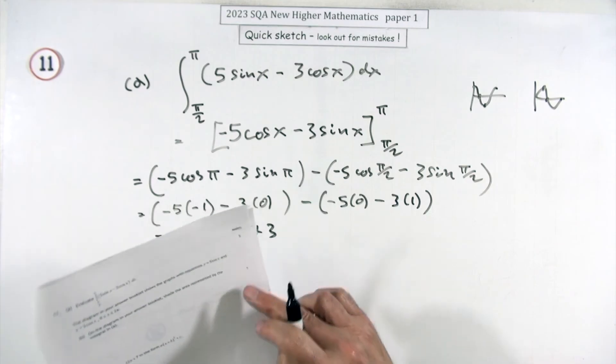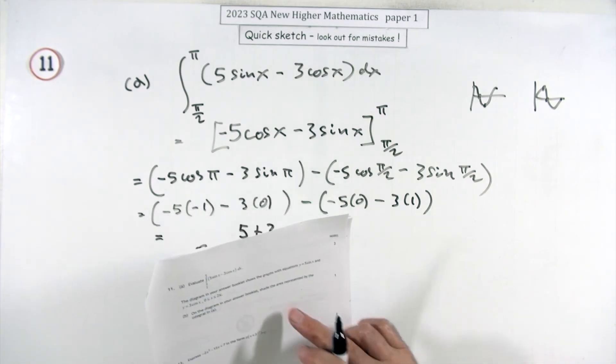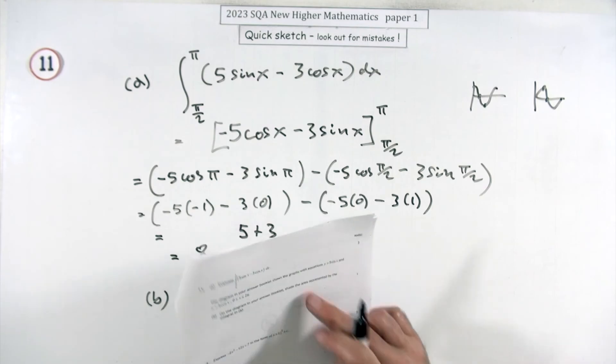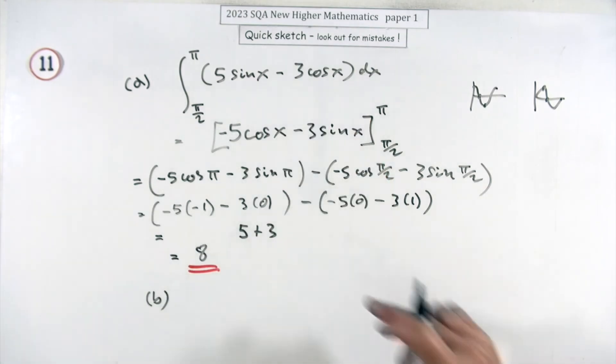That's five take away zero, which is five. Take away a negative is plus three, so the answer is eight. Part b is only worth one mark. You have to shade the area that this integral represents.